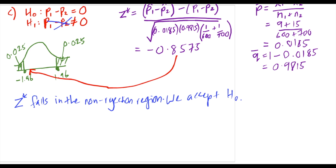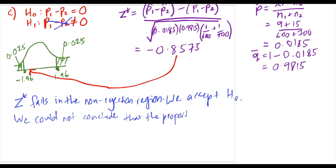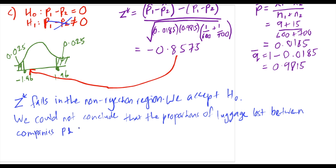Since we accept the null hypothesis, we could not conclude that the proportions of luggage lost between companies P and Q are different.